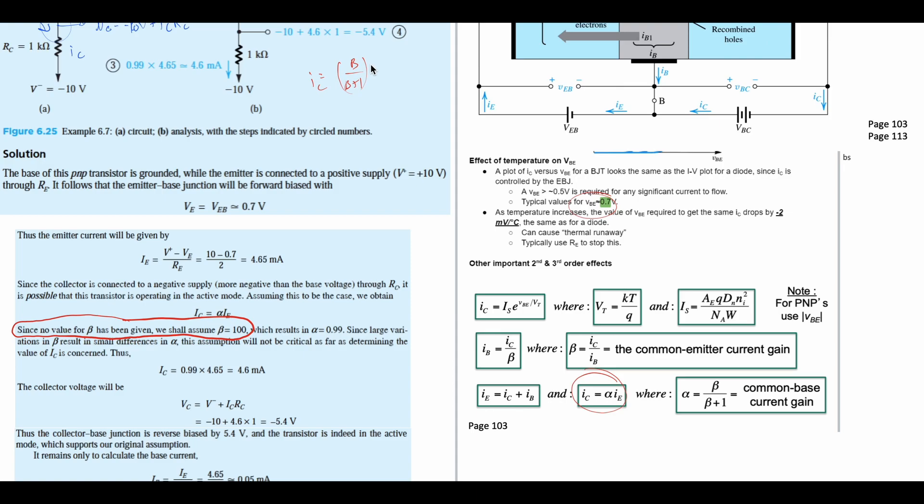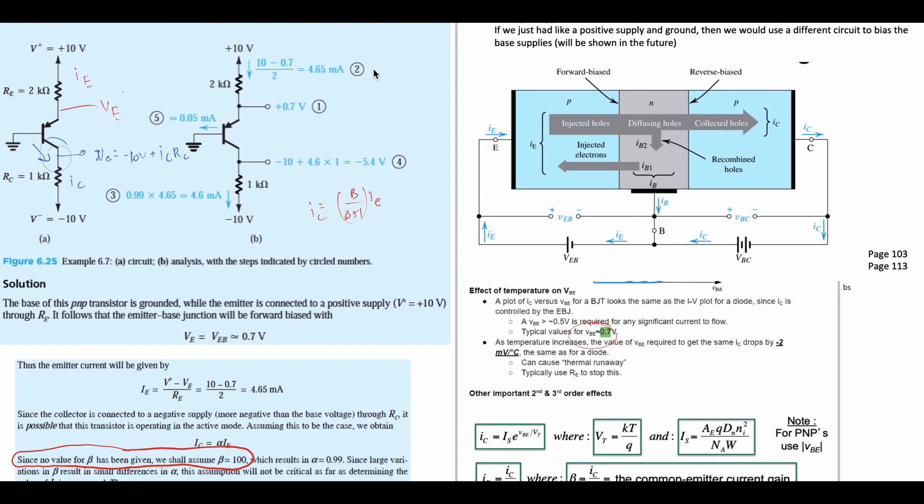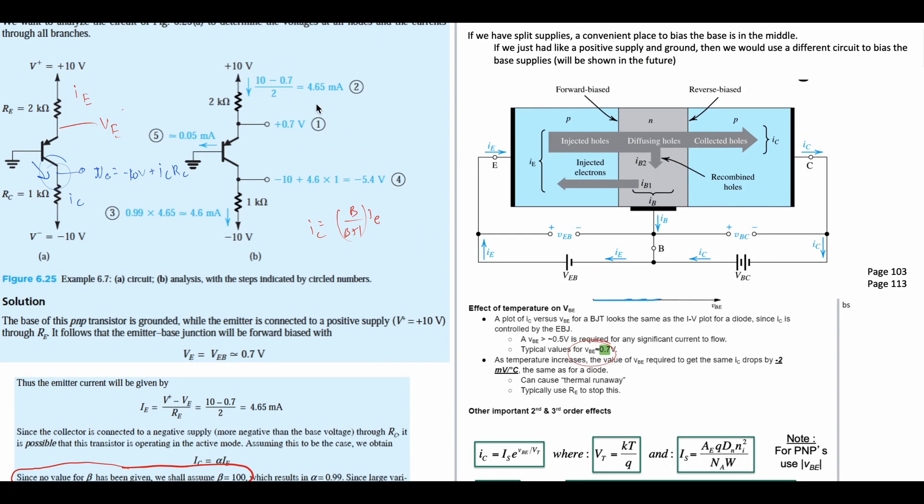Times our IE, which we found earlier to be 4.65 milliamps. That is going to be the same thing as this right here, so that's going to give us that equation. It's going to give us 4.6 milliamps.